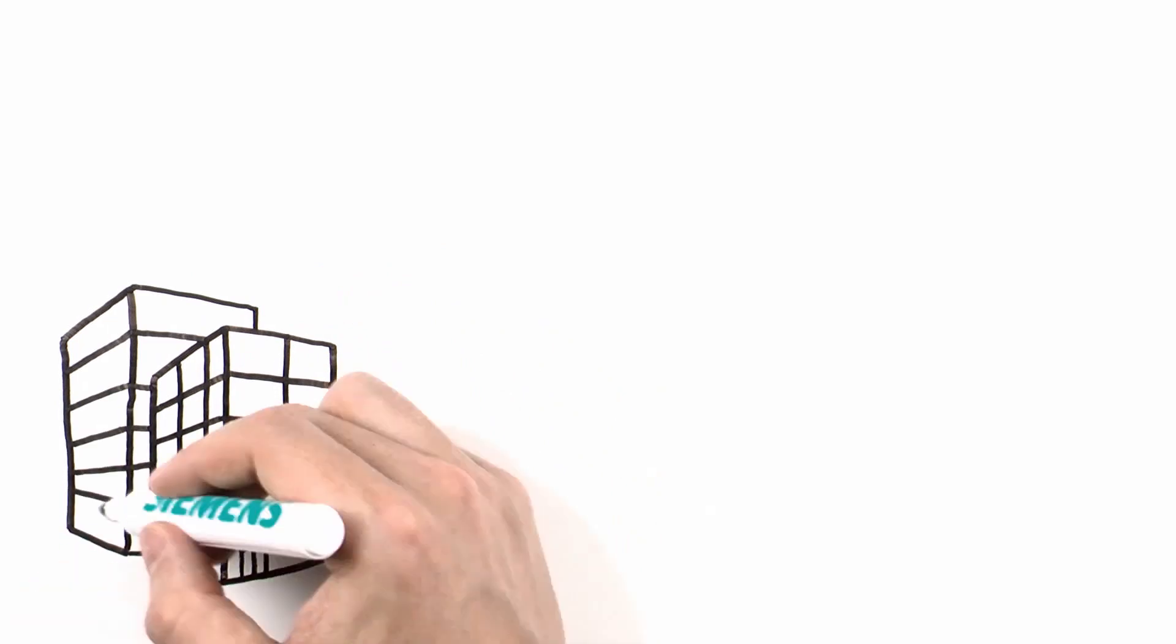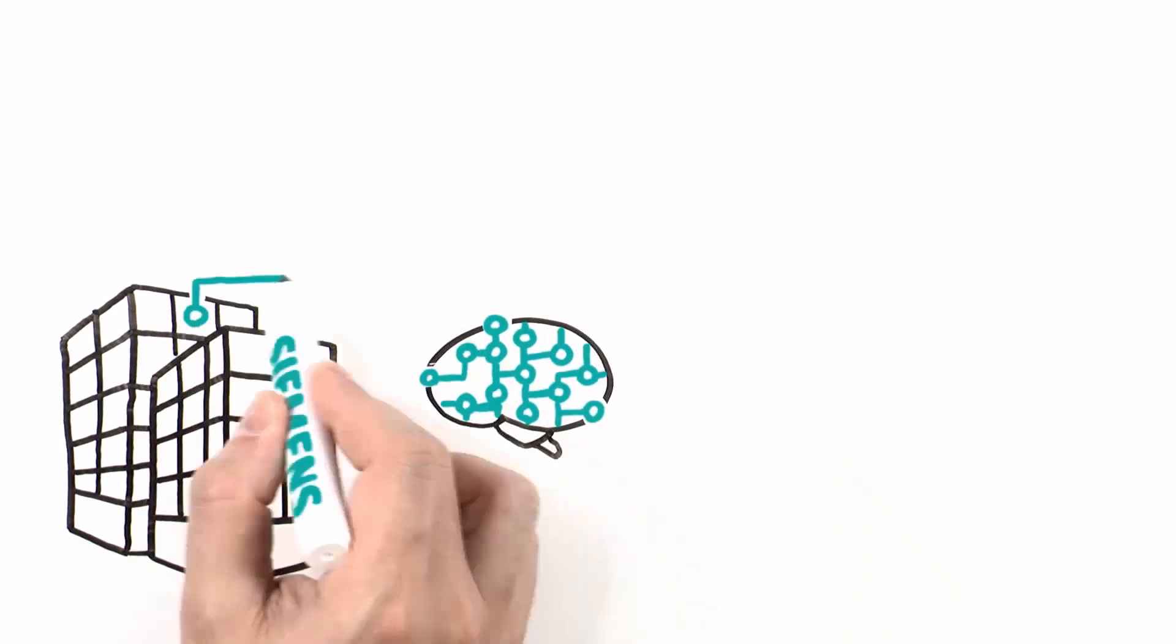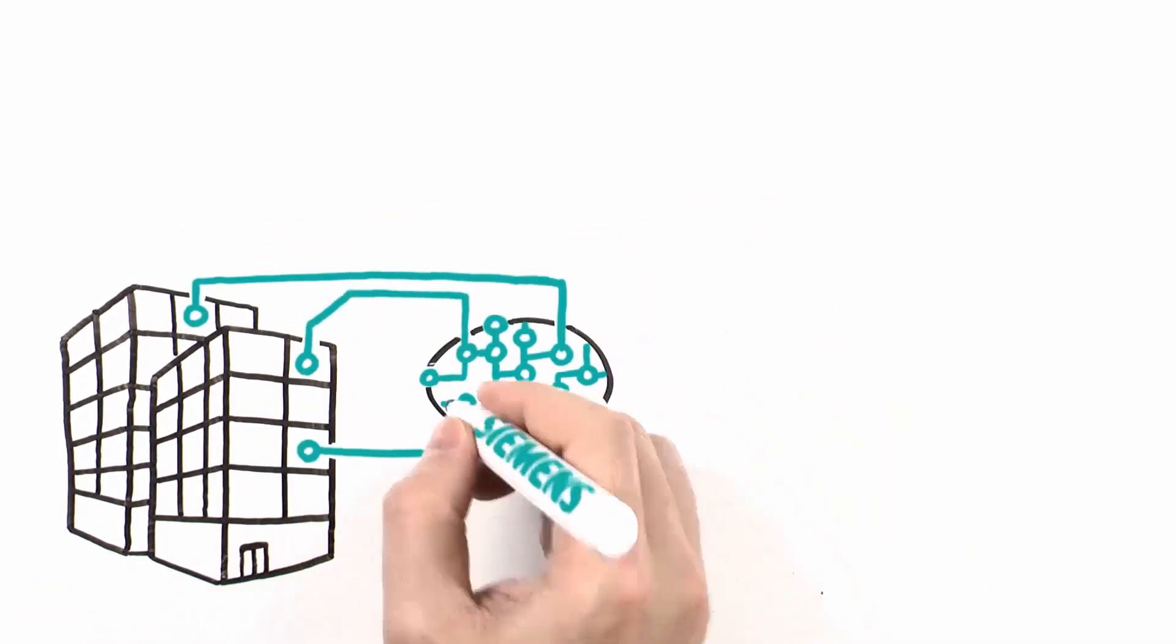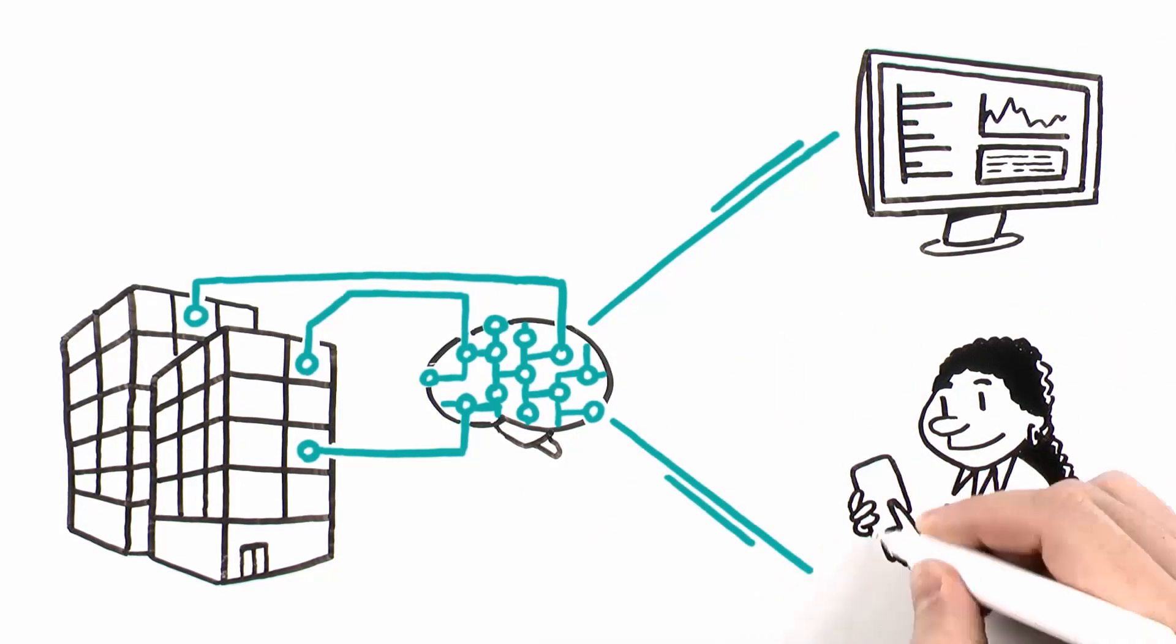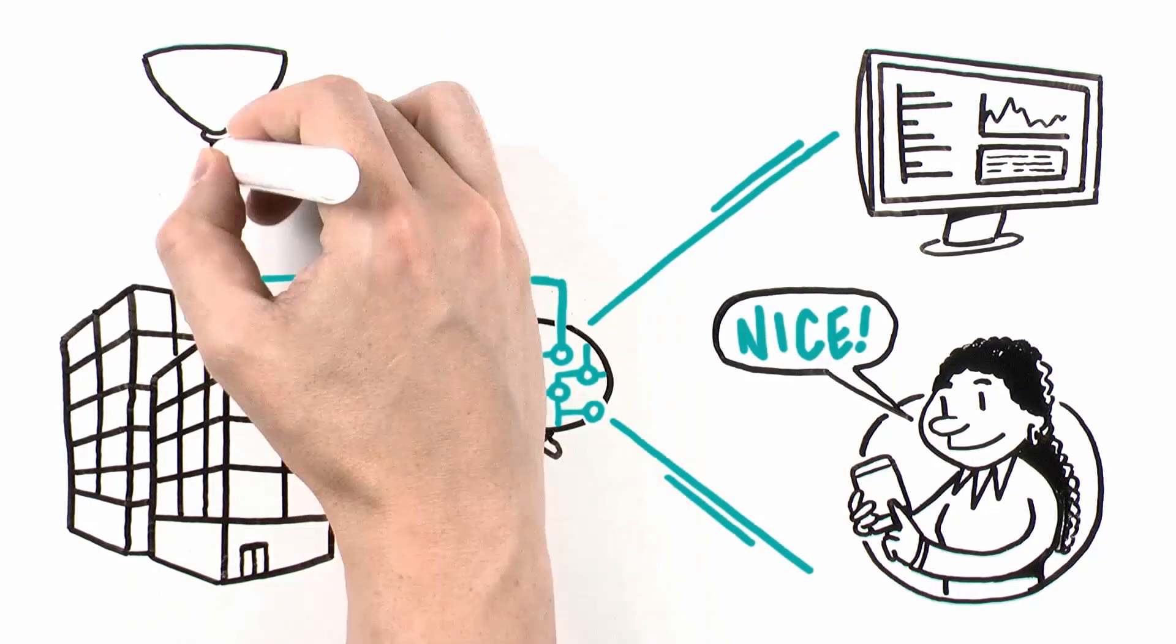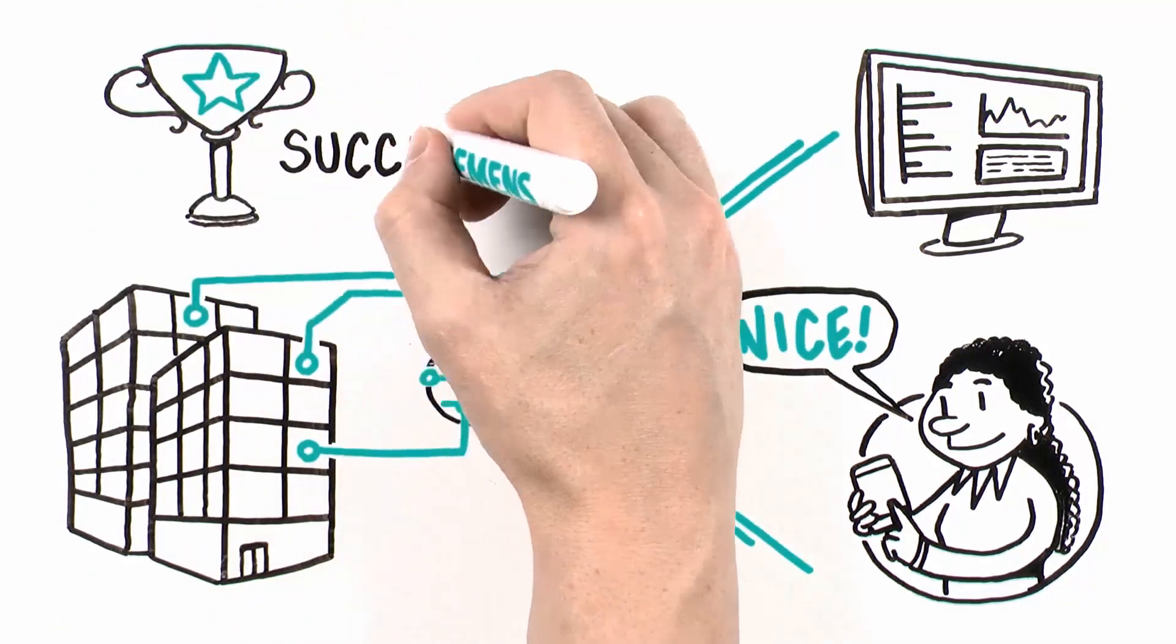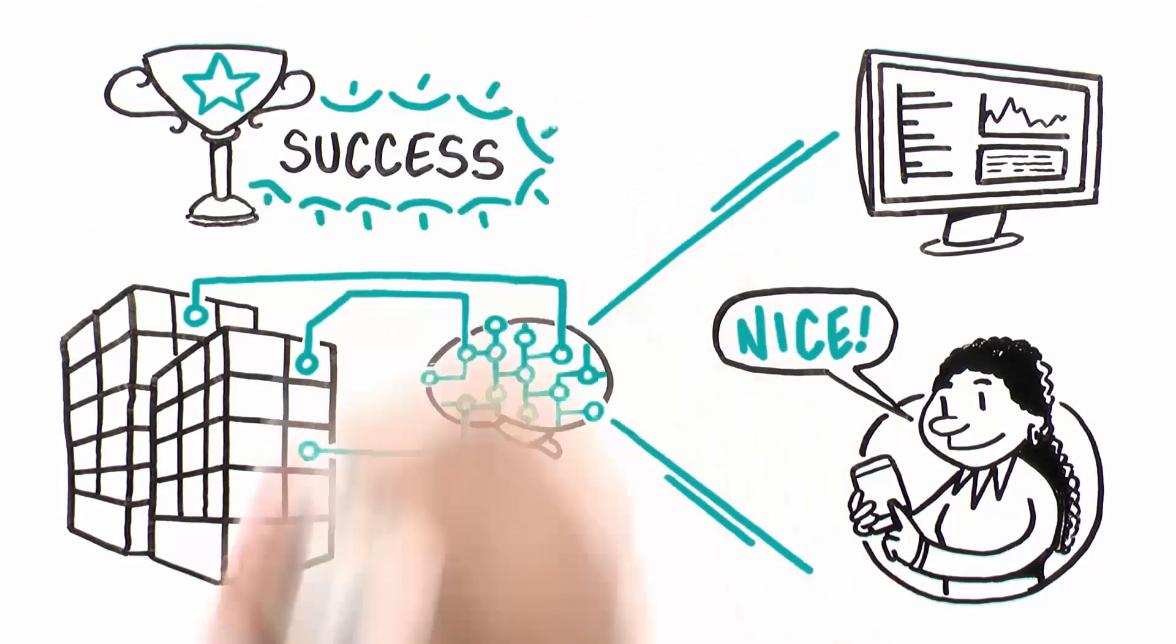To be truly smart, a building must deliver world-class operations and occupant engagement, transforming the building into an extension of the people who work and visit there. Your building becomes an active contributor to the success of your occupants and your business.